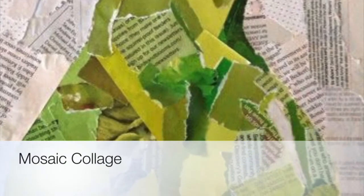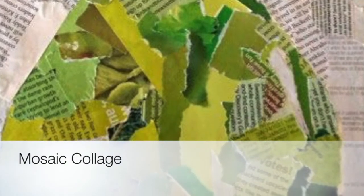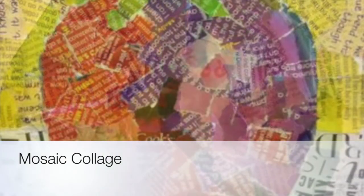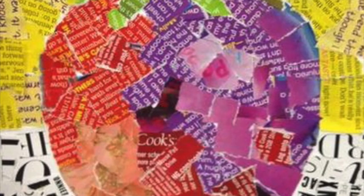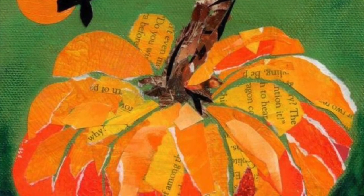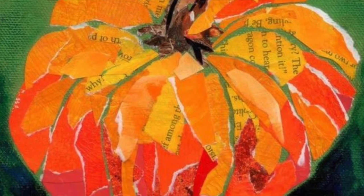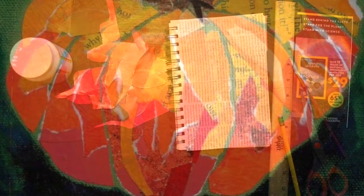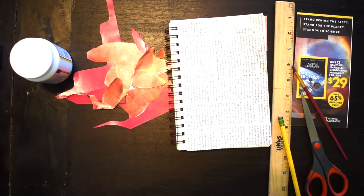Hey friends! Today I'm going to show you how to make something called a mosaic collage using magazine paper. Collage means that you are cutting and gluing paper, or in this case ripping and gluing paper, and a mosaic means that you take small pieces and put them together to make one big thing.